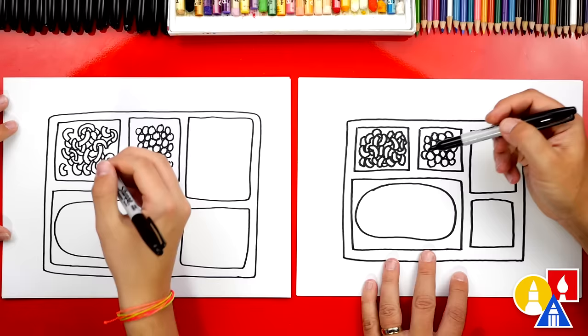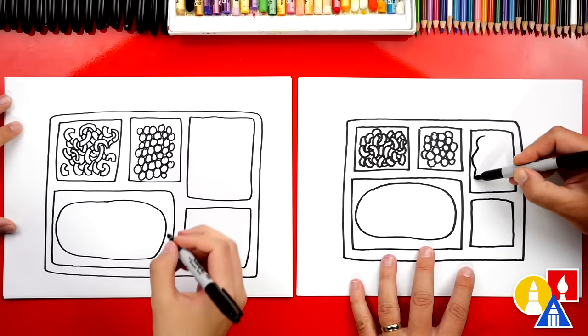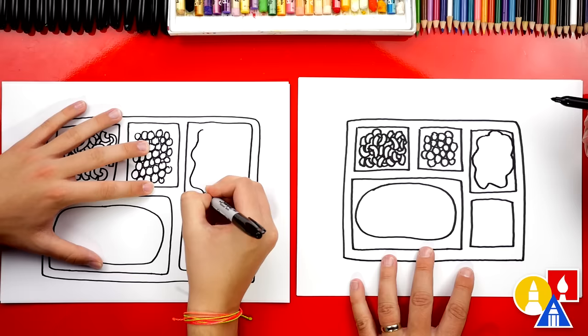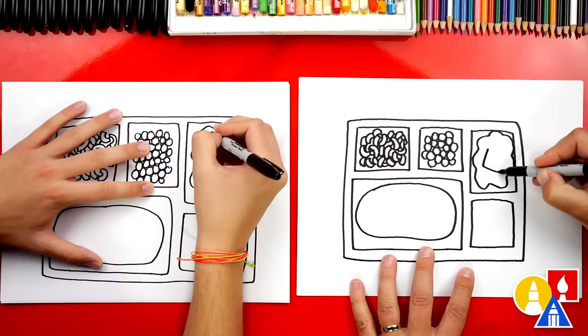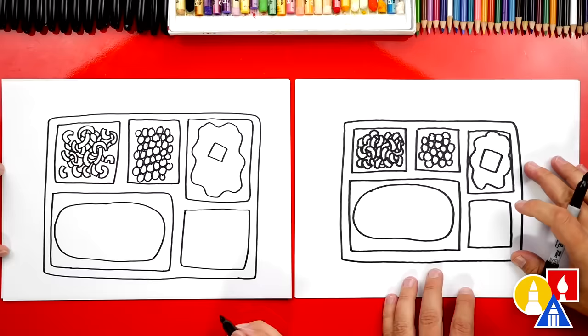Remember to pause the video to finish your mac and cheese. Let's add one more or we could add my favorite mashed potatoes. I'm going to just draw a cloud line that goes around inside and then also we could add a little square for the butter on top.